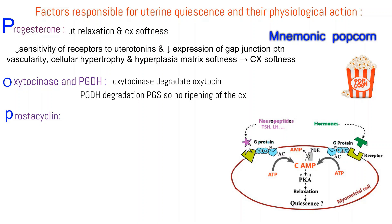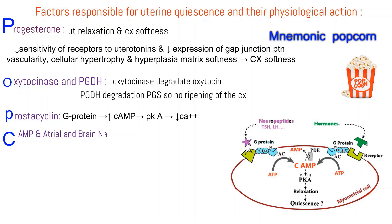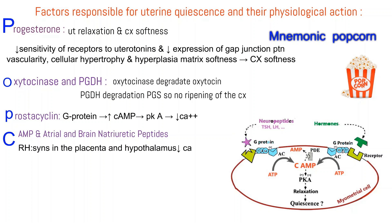Prostacyclin increases intracellular cyclic adenosine monophosphate (cAMP), which activates protein kinase A, causing inhibition of calcium mobilization. C: Cyclic AMP and atrial and brain natriuretic peptides. CO: Corticotropin releasing hormone synthesized in the placenta and hypothalamus decreases intracellular calcium in the myometrium.